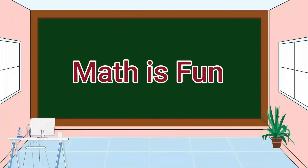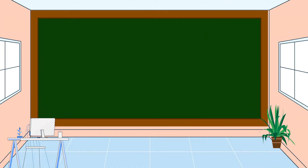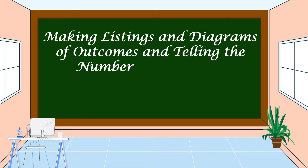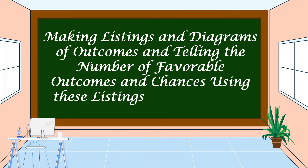Hello everyone, welcome to Math is Fun. Our lesson for today is all about Making Listings and Diagrams of Outcomes and Telling the Number of Favorable Outcomes and Chances using these Listings and Diagrams.